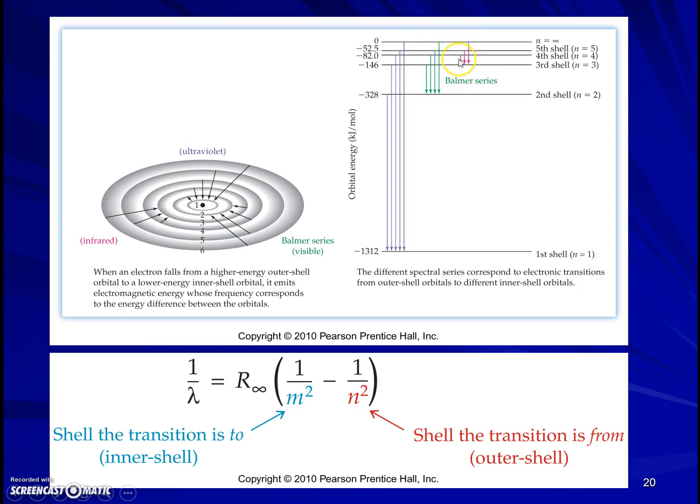And additionally, some peaks that would show up if we could detect infrared radiation, and those are from higher level down to level three.